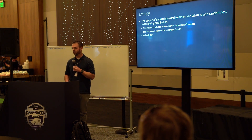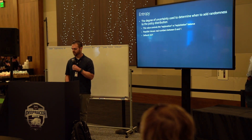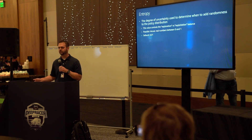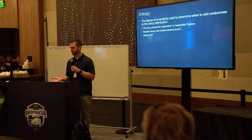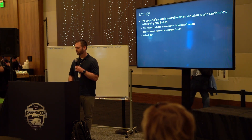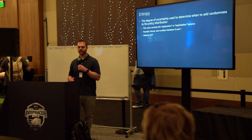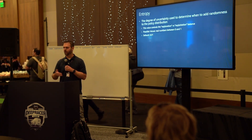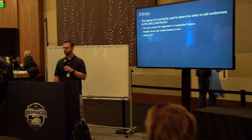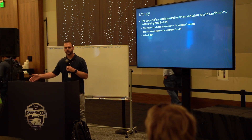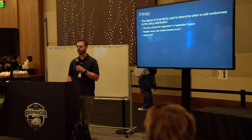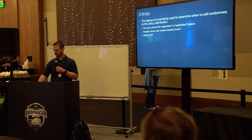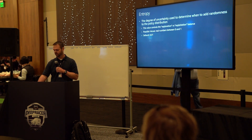Entropy is basically how much randomness you introduce into the actions that the car is going to take. You need this because in order for the car to learn and explore the space available to it, it has to take random actions. In order to find the most optimal path, it has to try different things. If the entropy is too low, it's just going to use what it's learned so far through the model updates. You want more entropy at the beginning of training, and then as things progress, you can dial it back and let the agent start to exploit what it's learned. That's a value between 0 and 1, with a default starting at 0.01.